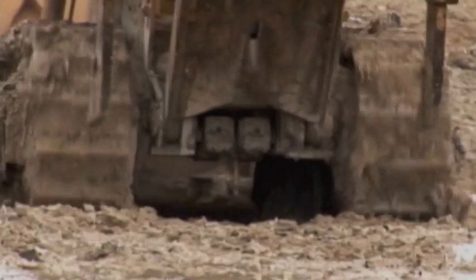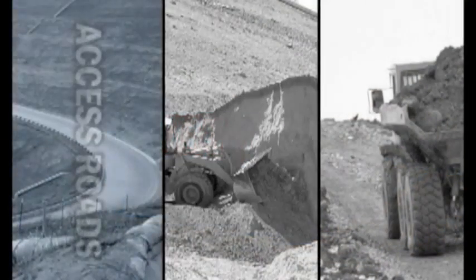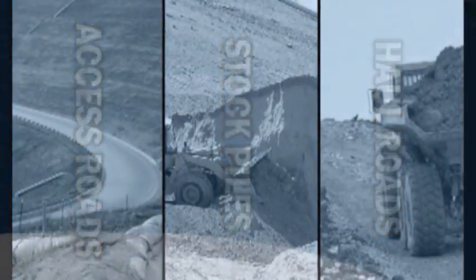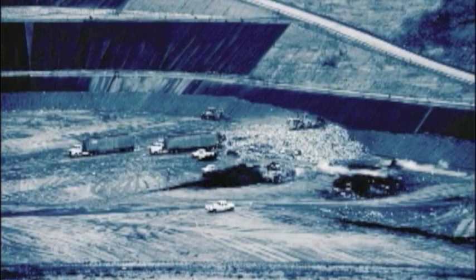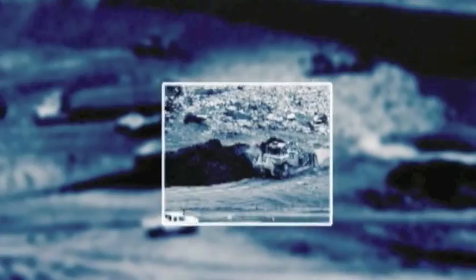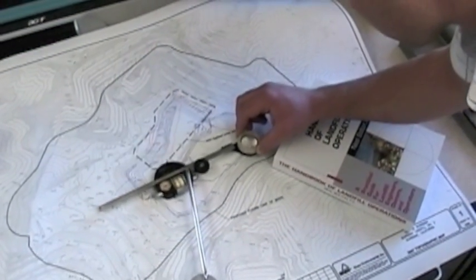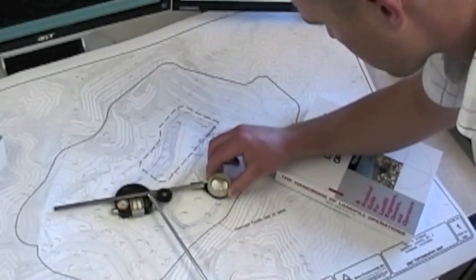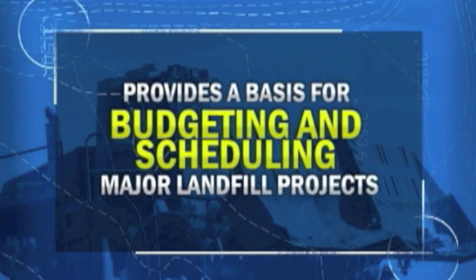Where will your next tipping pad be located? Will your current lined area last until next year? Are your access roads, stockpiles, and haul roads in the best locations for the longest use? Your landfill sequence plan provides answers to these and other important questions. It does more than just show an arbitrary sequence of filling — it shows an optimized operation, ensuring the overall operation is as productive and cost-effective as possible. An optimized sequence plan also provides a basis for budgeting and scheduling major landfill projects.